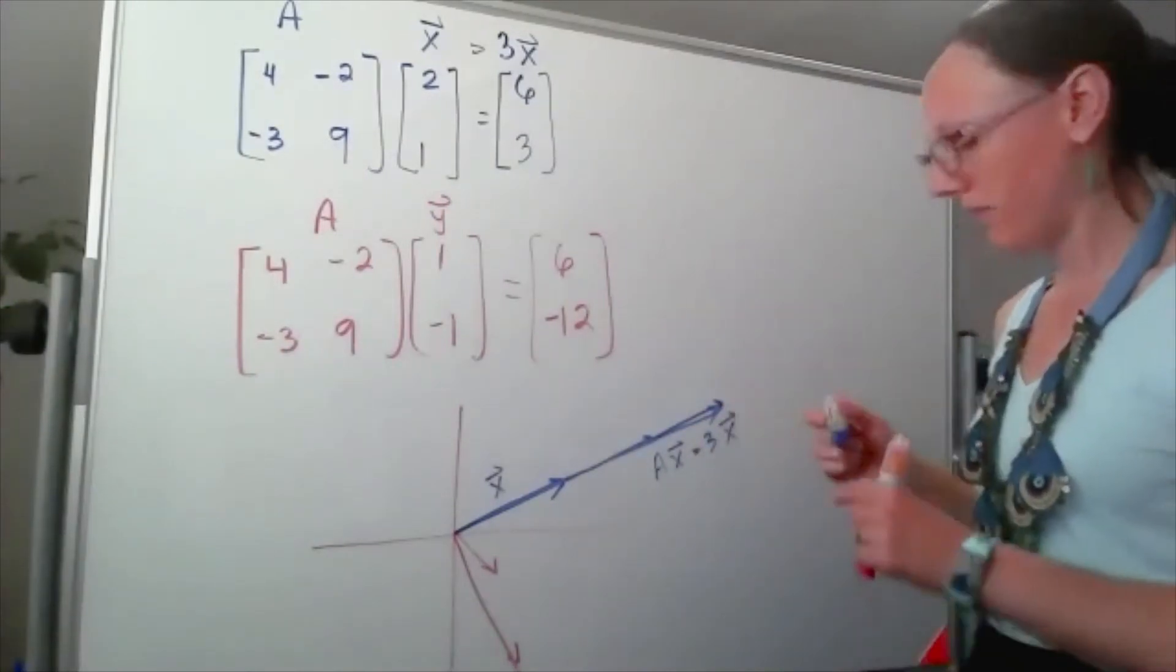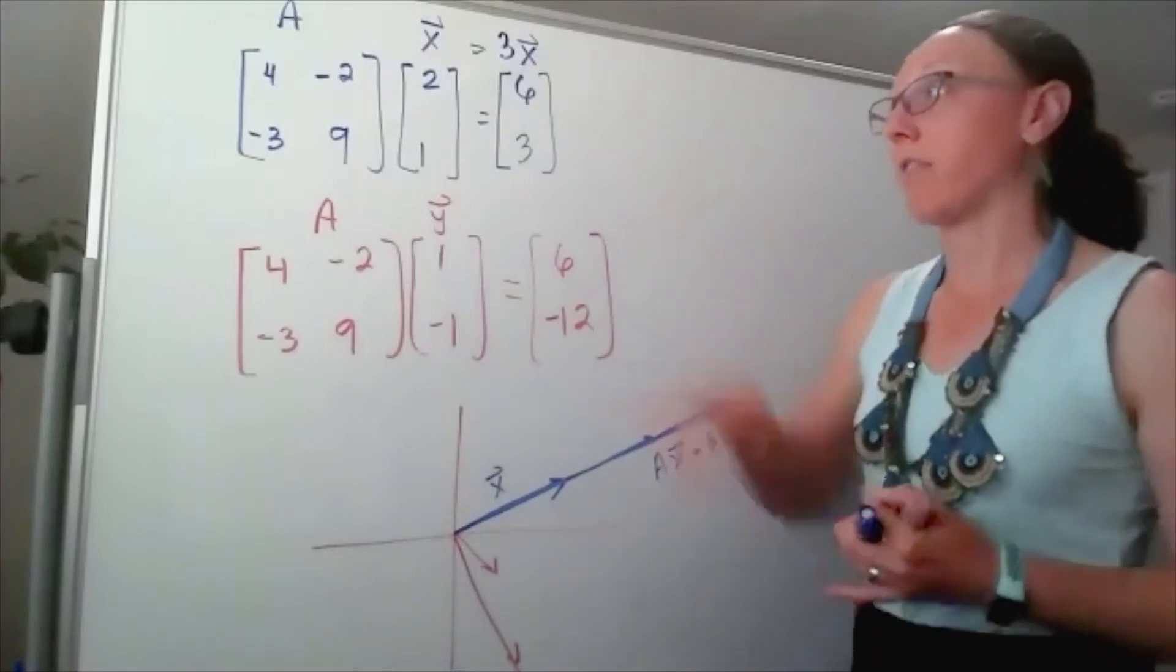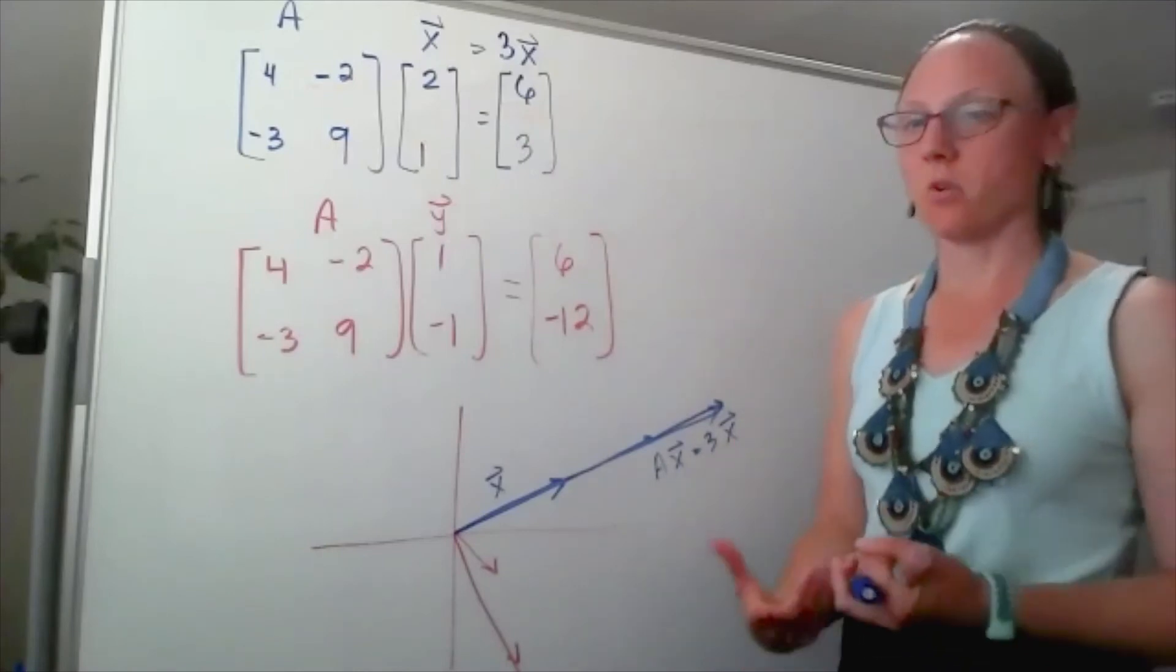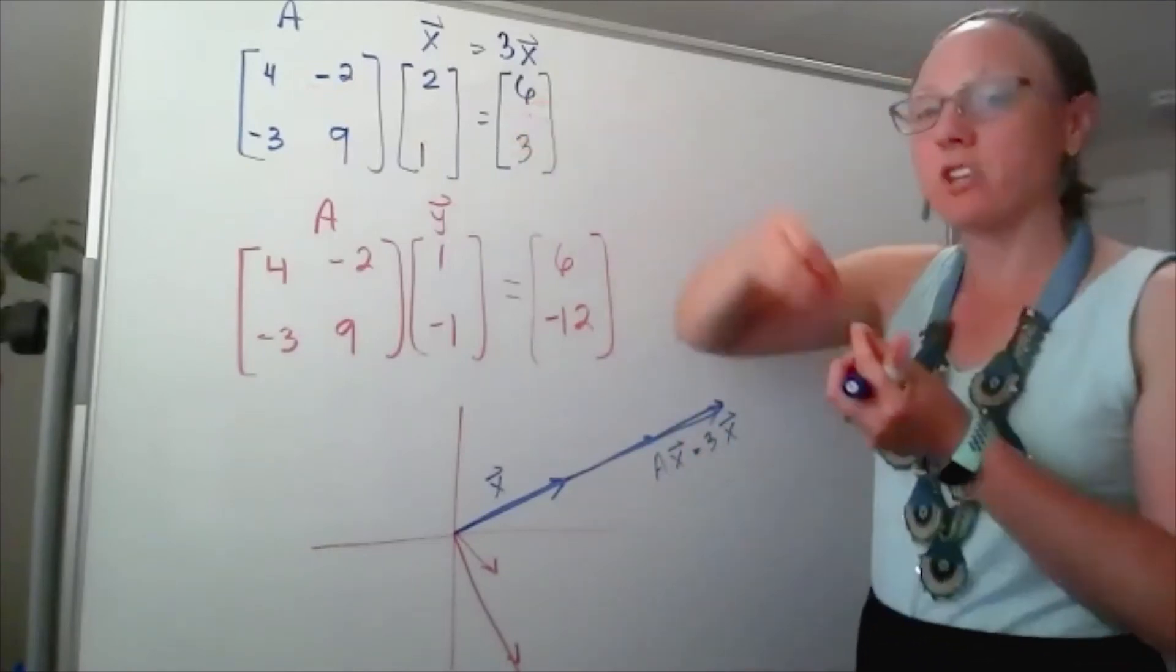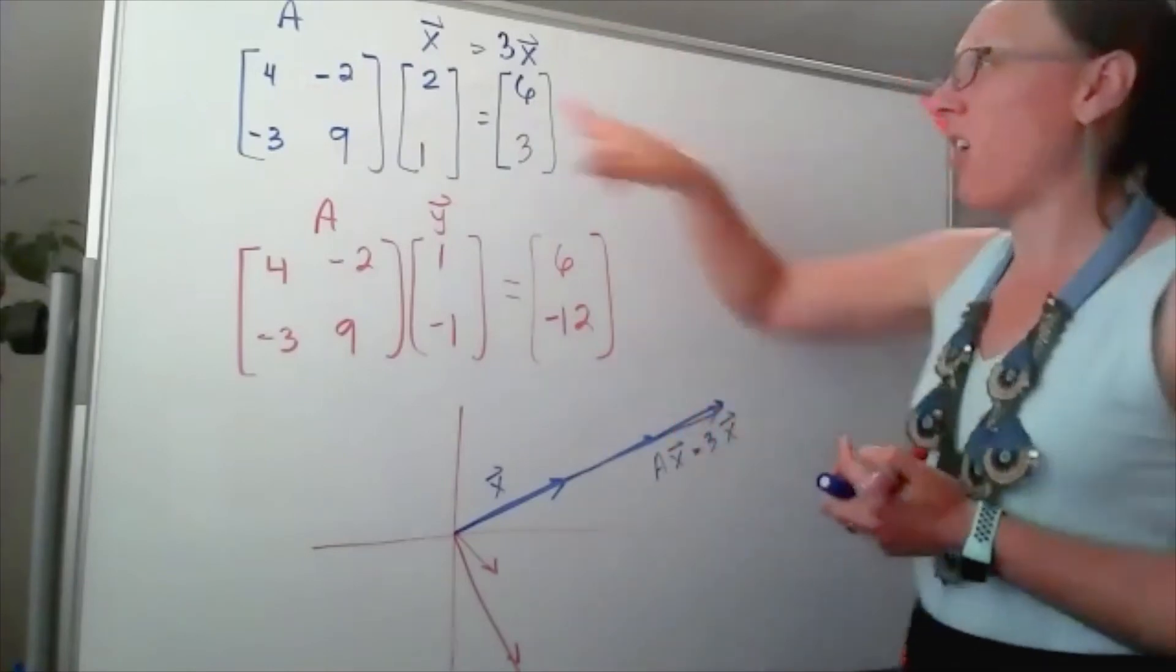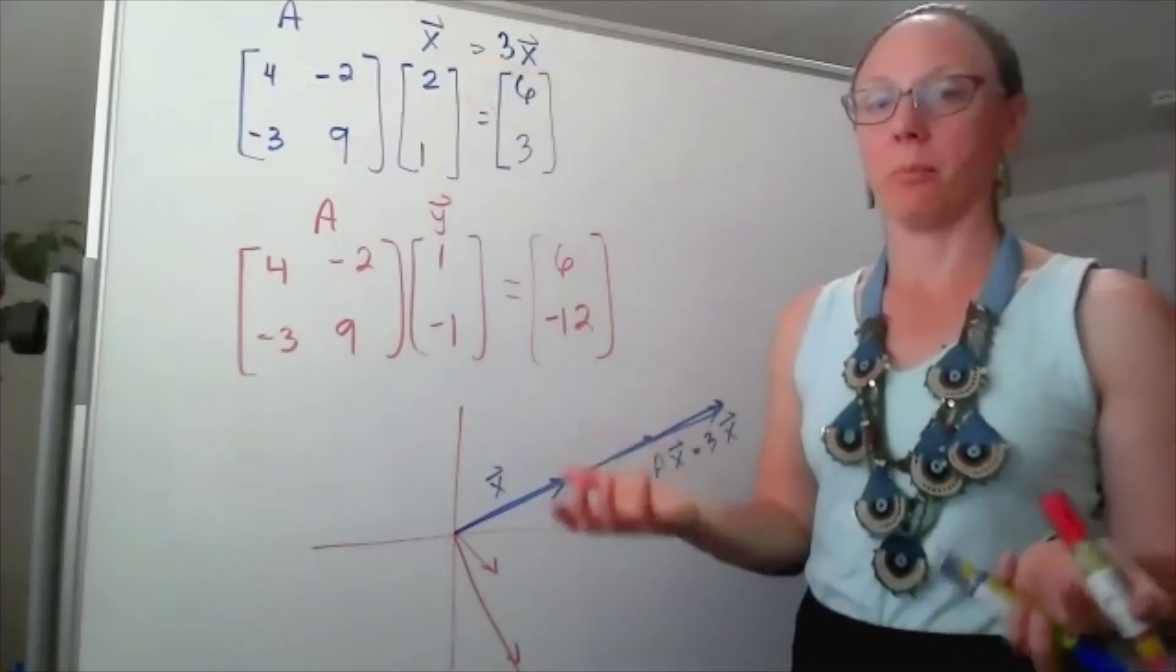And this very special relationship, where for a given matrix multiplying by a specific vector results in only stretching the length of that vector - that's when we call that vector and that special number an eigenvalue-eigenvector pair.